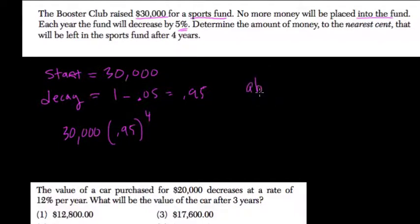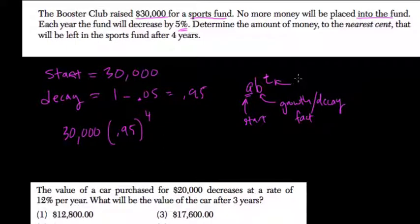In general, A times B to the T, right? Where A is your start, that number here. B is your growth or decay factor. And T is the time period required, whatever it is, for growth or decay.